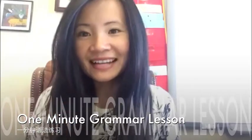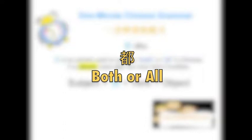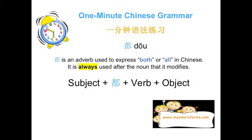大家好，欢迎来到 Mandarin for Me 的一分钟语法练习。Welcome to Mandarin for Me's 1-minute grammar lesson. Let's learn about the adverb 都, which is used to express 'all' and 'both' in Chinese. 都 is actually quite easy to use. The structure for it is: subject plus 都 plus verb plus object. Just remember, 都 always appears after the subject, and it will never appear after a verb.